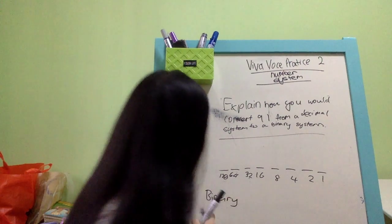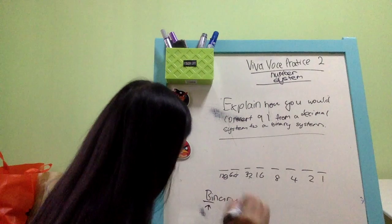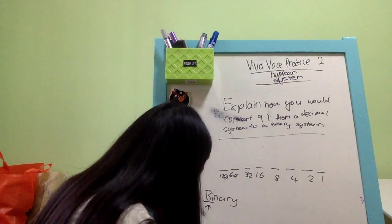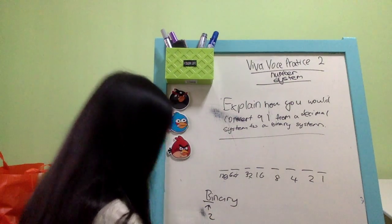From the word binary, right? Okay, you see the word binary? Bi is 2. Alright, so bi is 2, right?